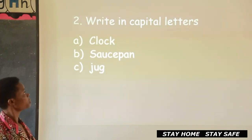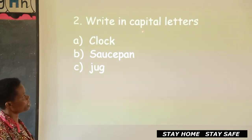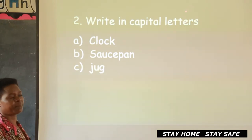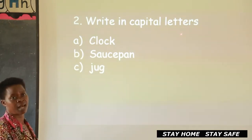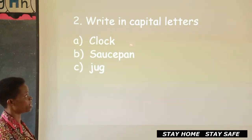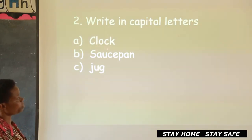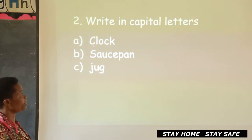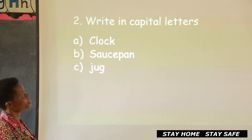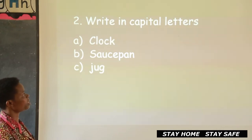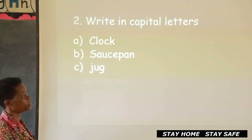Number two. Let's read together: write in capital letters. Capital letters are sky letters — big letters. I told you capital and small; these ones are written in small. Let's read the first word: clock. These ones are small letters, so we are supposed to change to capital: capital C, capital L, capital O, capital C, capital K. You write it there.